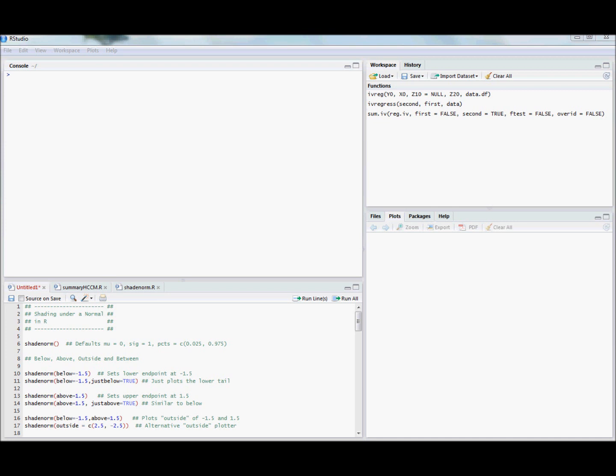The polygon command is a standard way to shade areas under a density in R. Using the polygon command can get a little bit cumbersome. This command that I've written makes it easier to shade under a normal distribution, and basically anyone who knows what they want to do after they watch this video should be able to shade under a normal distribution using R.